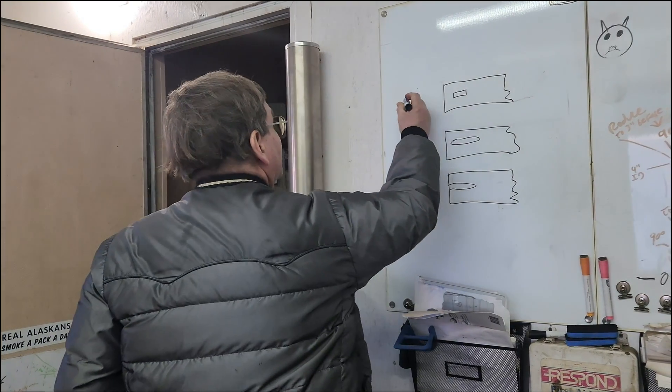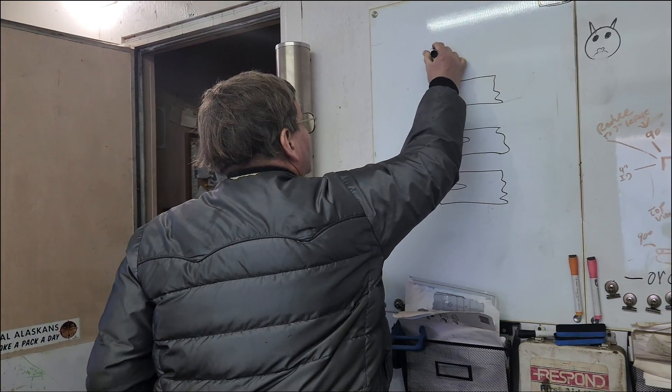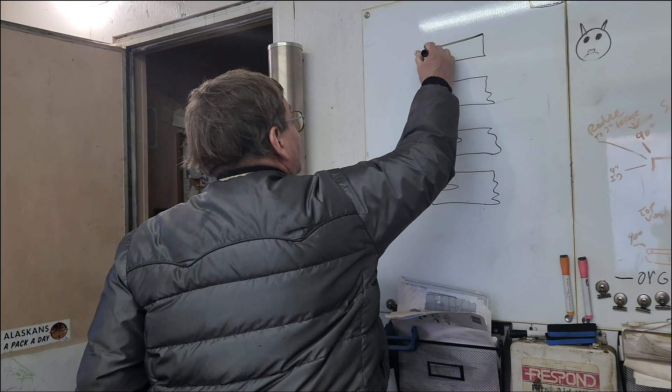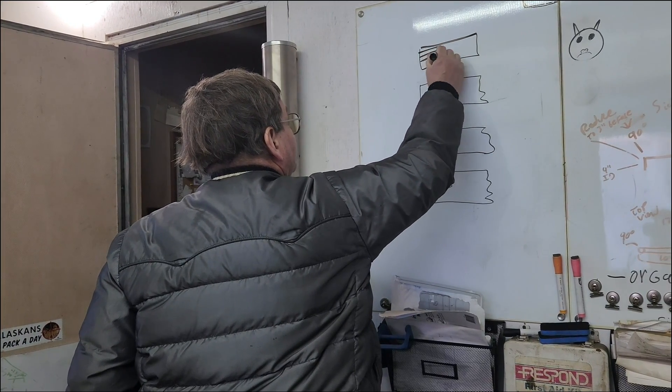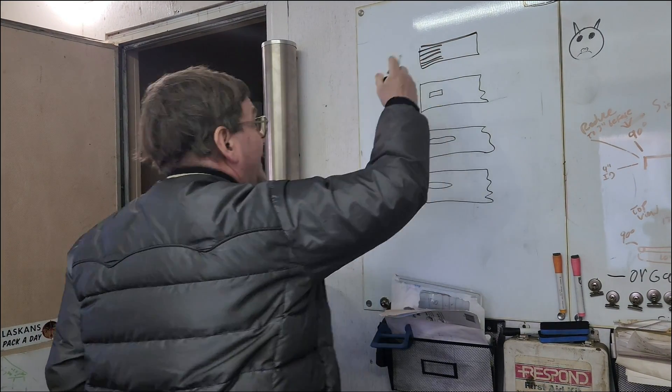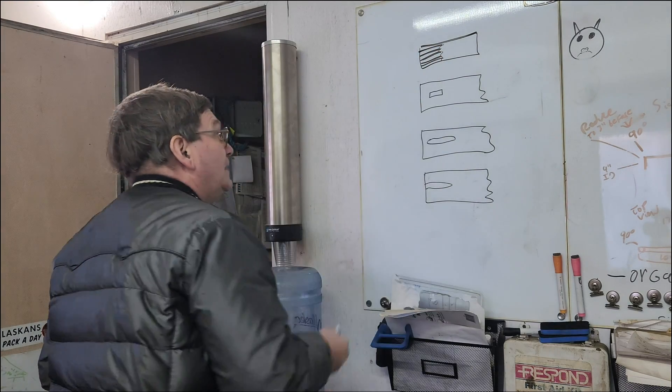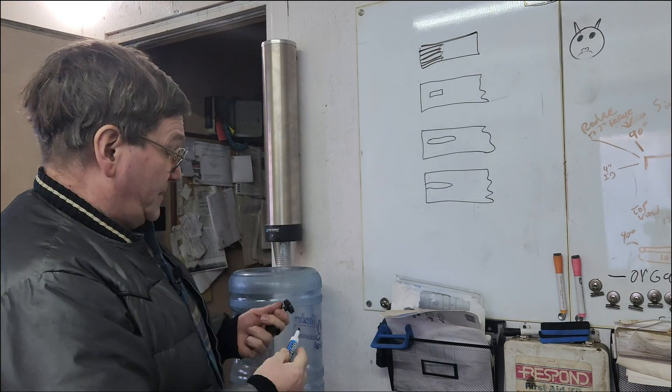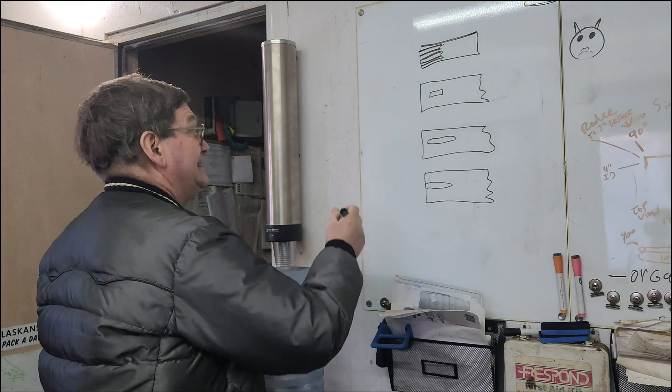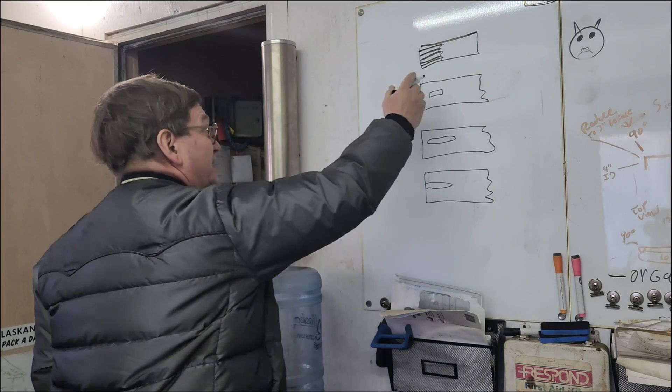We could also, instead of a keyway, have our shaft with splines. If we have splines out here, one of the big advantages is that we have lots of area that grabs.